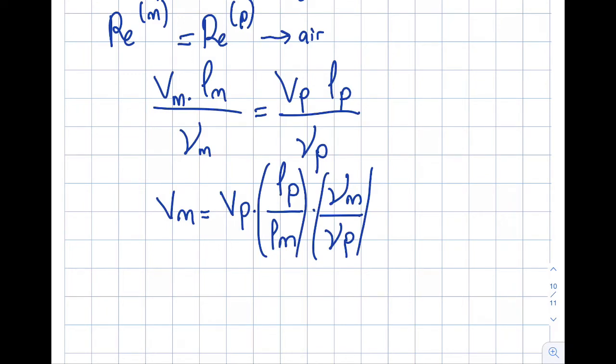I write it like this because typically when I have a scale, this is what it will be. Since the prototype is larger, Lp over Lm equals five. Sometimes students call it one-fifth, but then the model becomes larger, which isn't realistic.